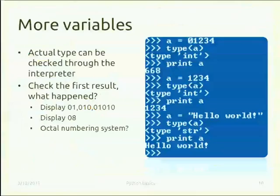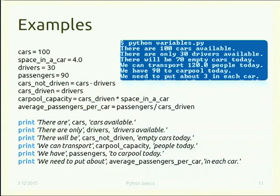Here's a program that defines some variables: `cars = 100`, `space_in_a_car = 4.0`, `drivers = 30`, `passengers = 90`. Then `cars_not_driven = cars - drivers`, taking the content of `cars` and subtracting `drivers`. Nothing unusual — variables contain numbers, and mathematical operations are applied to them.